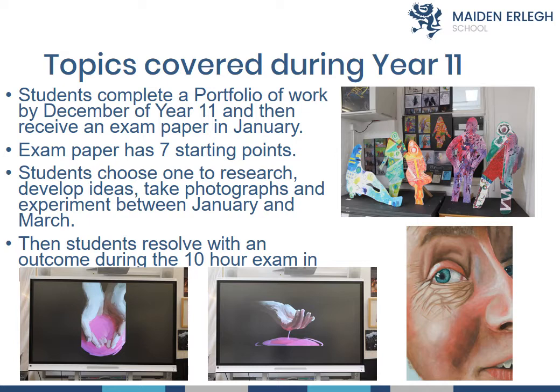By the end of Year 10 going into Year 11, students complete a portfolio of work by December of Year 11, then receive an exam paper in January. The paper has seven open-ended starting points; students choose one question and develop ideas through photographs and experiments between January and March. Students then resolve an outcome during a 10-hour exam in March, spread over two days to create the practical work.